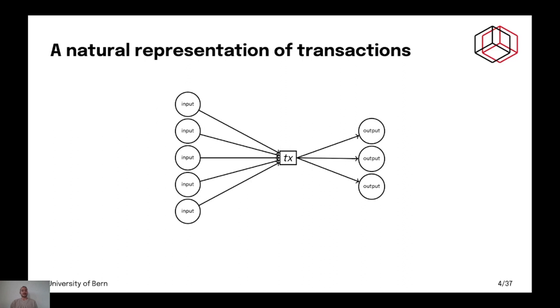And outputs are also coins or accounts. Well, in the case of UTXO model, these are coins. And in the case of account-based model, this is the state of an account.